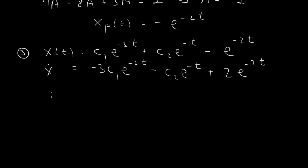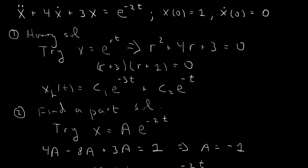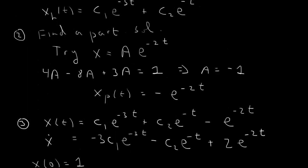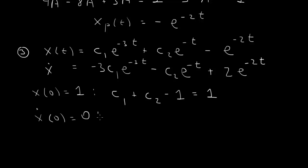We use the general solution to satisfy the initial conditions: x(0) equals 1 and x-dot(0) equals 0. Plugging t equals 0 into x gives c1 plus c2 minus 1 equals 1, so c1 plus c2 equals 2. Plugging t equals 0 into x-dot gives minus 3c1 minus c2 plus 2 equals 0.